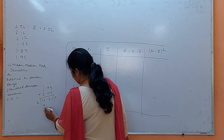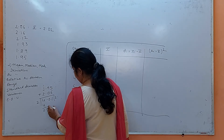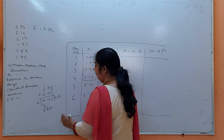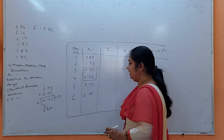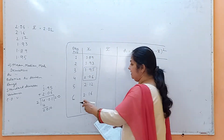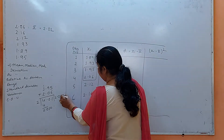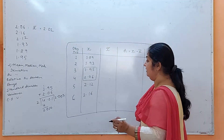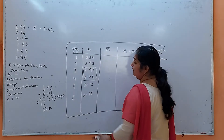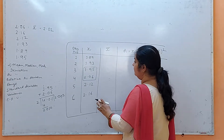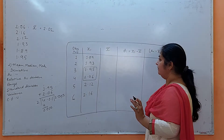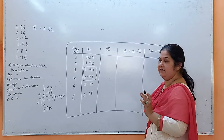So 1.95 plus 2.06 divided by 2 gives us 2.005. This becomes your median. Now for mode — nothing is repeated here, so the mode comes out to be no mode. There is no mode in this set of observations.